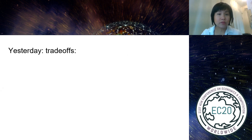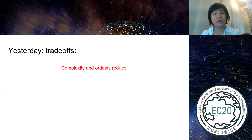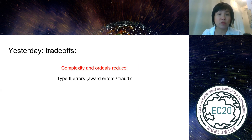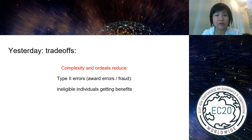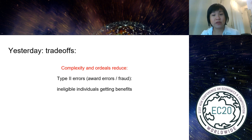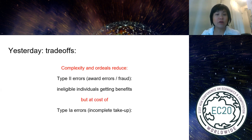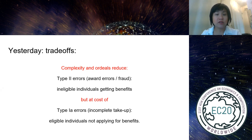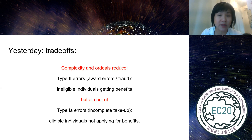That process has a trade-off: adding complexity and ordeals reduces type 2 errors — ineligible individuals receiving benefits — but at the cost of type 1 errors, which is incomplete take-up. Eligible individuals are not applying for benefits because they anticipate high complexity and high ordeals.